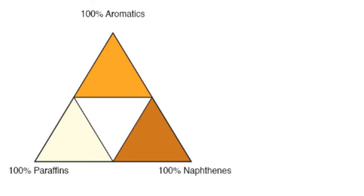For example, if you connect the aromatics corner with the paraffins corner, on that line you will only have aromatics and paraffins. As an example, let us define the region in this ternary diagram for Group 1, or Classification 1, crude oils — that is, paraffinic crude oils.